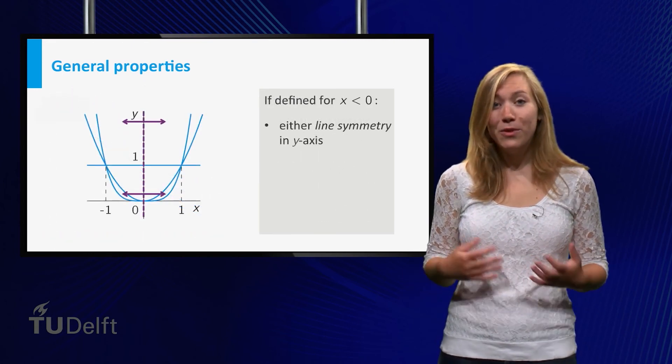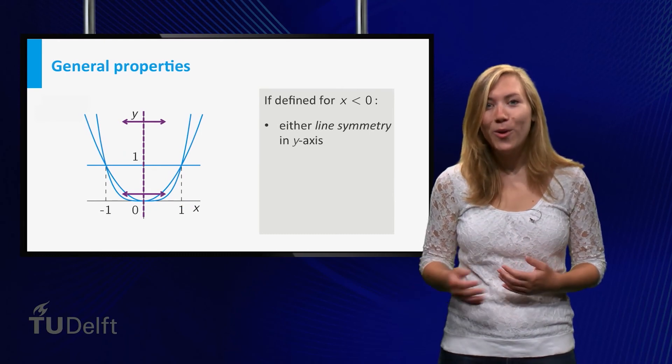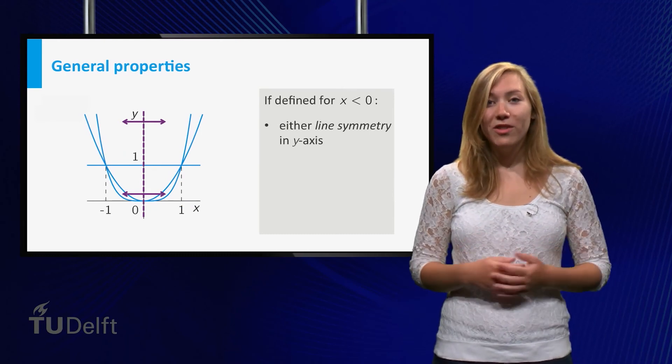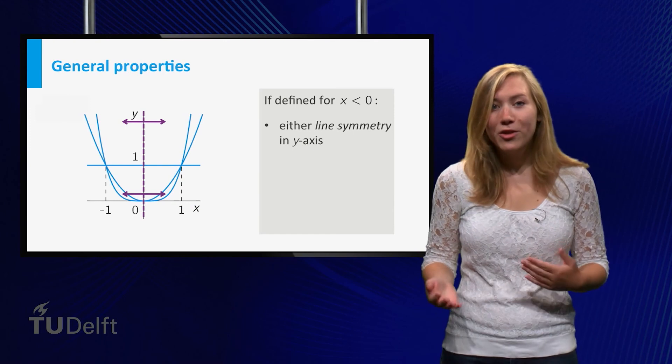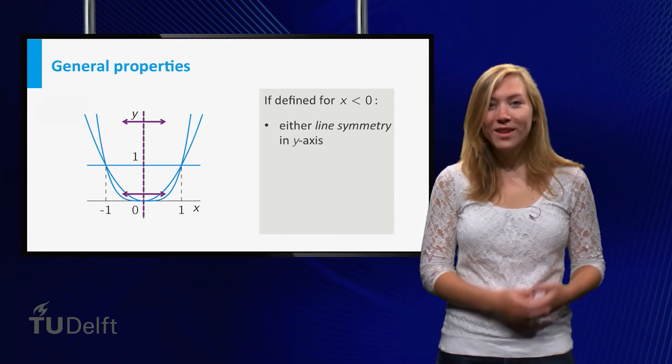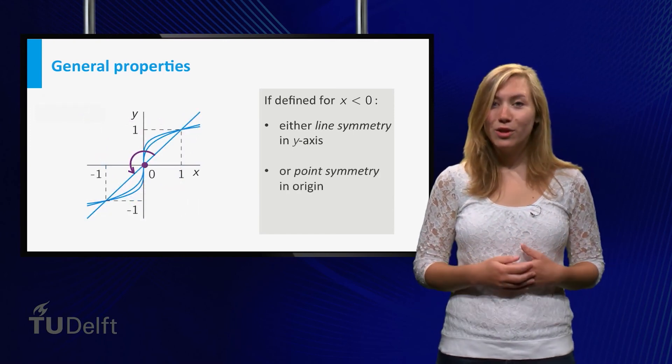If the power functions happen to be defined for negative x as well, the graph has symmetries. It is either line symmetric in the y-axis or point symmetric in the origin.